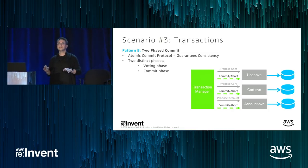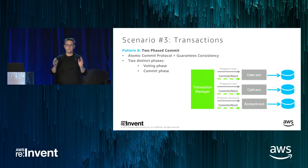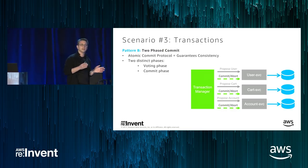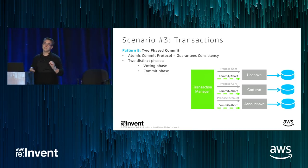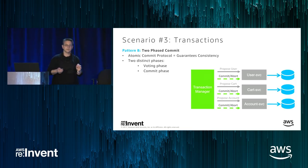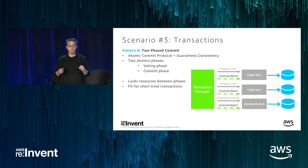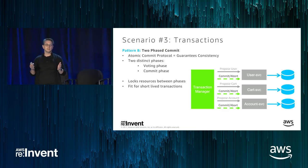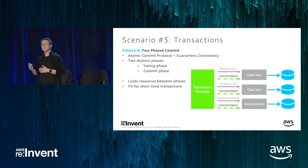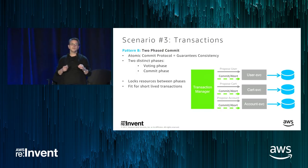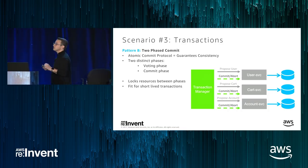Two-phase commit is a common approach and easy to implement, but there are weaknesses. The big weakness is that two-phase commit locks resources between the phases. Locking resources means adding contention to your application, which is never a good thing. Combined with failure modes — such as the transaction manager or one of the services failing — that contention can be even longer. Two-phase commit is primarily useful for short-lived transactions or scenarios where we're not concerned about network issues.